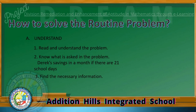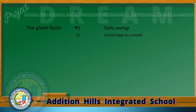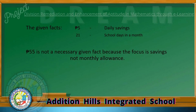Number 3: Find the necessary information. The given facts are P5 for daily savings and 21 school days in a month. P55 is not a necessary given fact because the focus is savings, not monthly allowance.